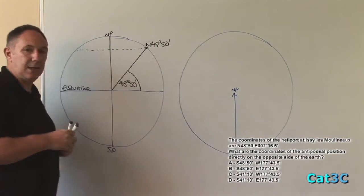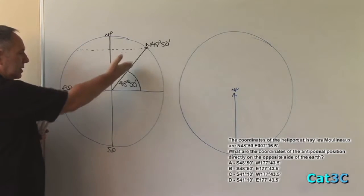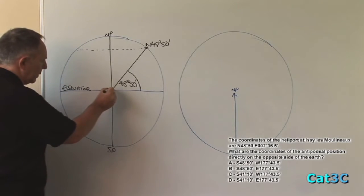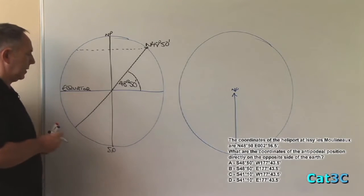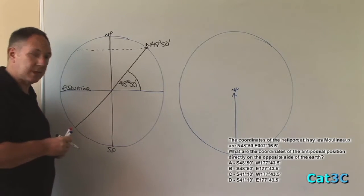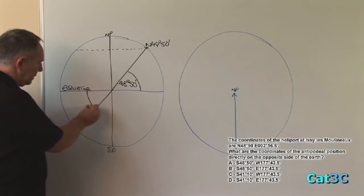To find the opposite latitude, we simply continue this line straight through the centre of the earth down to the opposing hemisphere. As you can see, the angle here will be the same as the angle in the northern hemisphere.